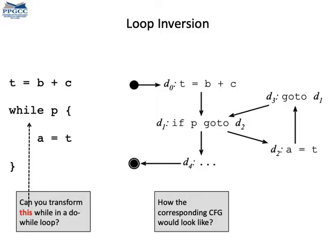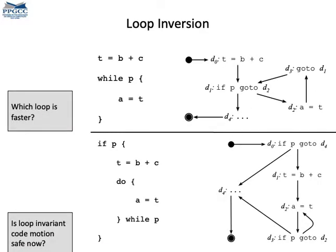As an example, let's try to transform this loop into a do-while loop. Its CFG is here on the right side. Notice that it has three instructions: the branch, the assignment, and the goto. Down in the figure, we have the transformed loop. Basically, we have a do-while loop enclosed within a conditional branch. The new CFG has more instructions, but notice that the loop itself has less instructions, only two, while before we had three.